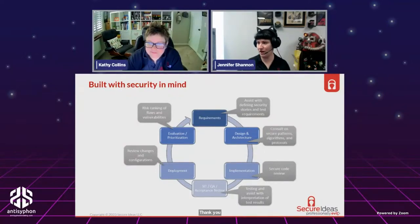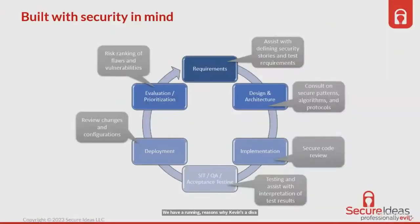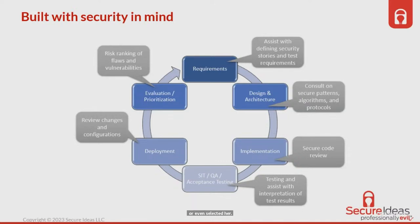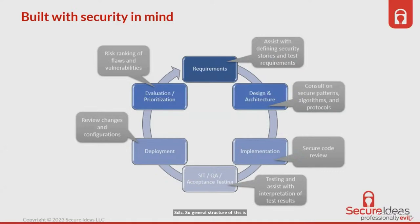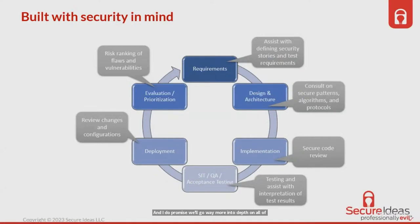We're going to use Agile for a lot of this because it's such a common SDLC. The general structure is: Requirements, Design and Architecture, Implementation with SIT QA acceptance testing, then Deployment, which feeds into evaluation of priorities and prioritization — all cycling back around. The goal is to continuously improve whatever it is we're developing.